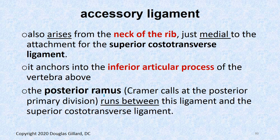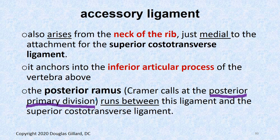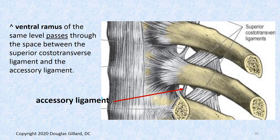The posterior ramus — which Kramer calls the posterior primary division, though Gray's Anatomy uses 'posterior ramus' — comes out through that tunnel formed by the accessory ligament. I prefer 'posterior ramus' because 'posterior primary division' gets confusing in the lumbar and sacral plexuses, where the posterior ramus splits into anterior and posterior divisions. The ventral ramus passes right through that space, kind of like transforal ligaments we talked about earlier.